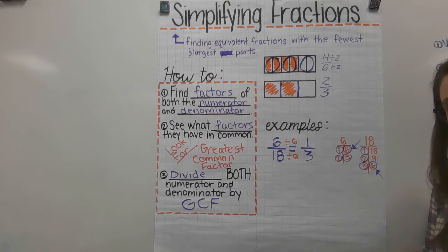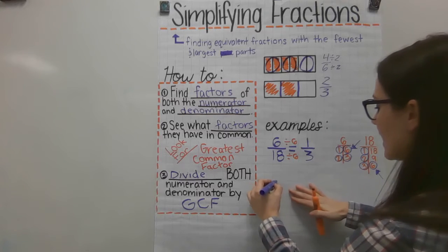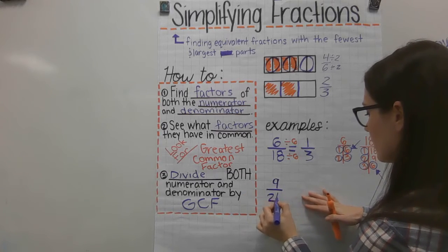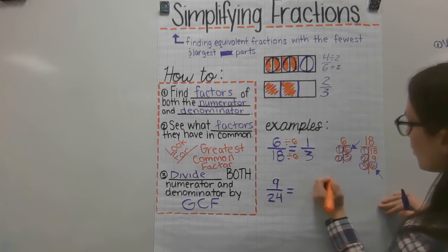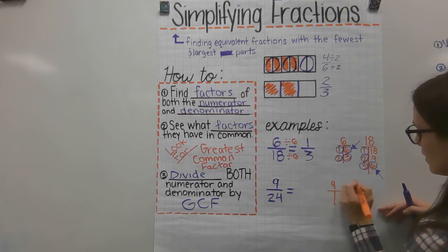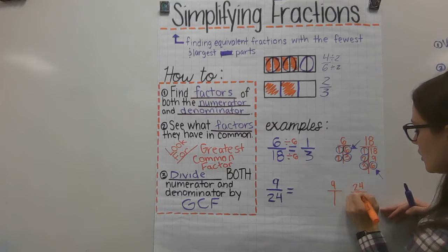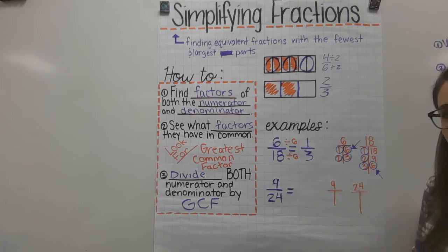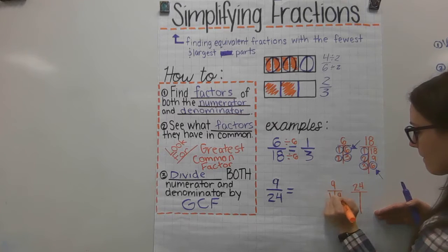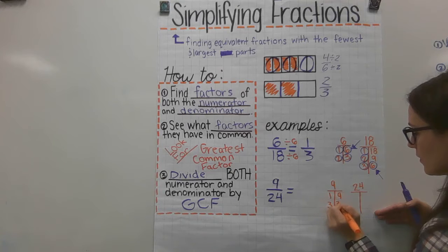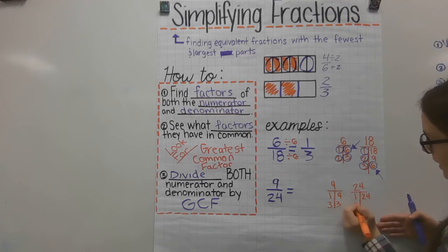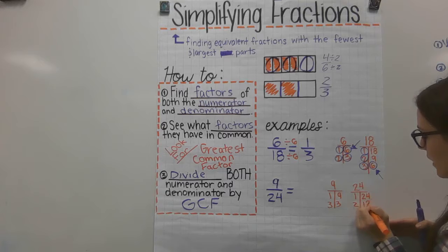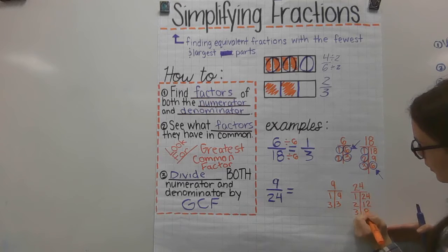Let's do one more together and then you'll try one. So let's say we have 9/24. The first thing we want to do is find the factors of both our numerator and denominator. Go ahead and pause the video and find your factors of 9 and 24. For 9, we have 1 and 9, and 3 and 3. For 24, there are more factors: 1 and 24, 2 and 12, 3 and 8, and 4 and 6.